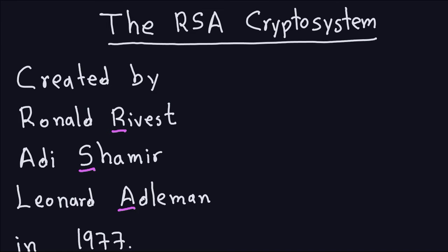Hello and welcome again. So now we are ready to talk about this asymmetric cryptosystem called the RSA. This is the first asymmetric algorithm or public key cryptosystem that we're going to talk about. This video is going to be kind of like an introduction to the cryptosystem — an overview of what the system is doing, with some details left for later.